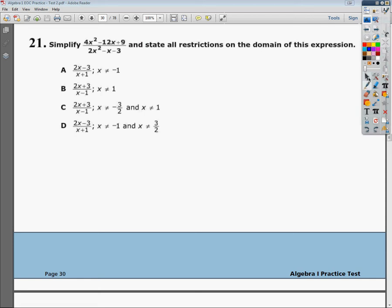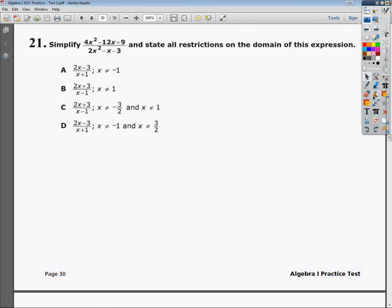The question says simplify and state all restrictions on the domain of this expression. I'm going to do it two ways. The first way is by factoring, and the second way I'm going to show you is a way you can use the calculator to sort of cheat to get the right answer. I'm not proud of the second method, but I'm just trying to give you all the options.